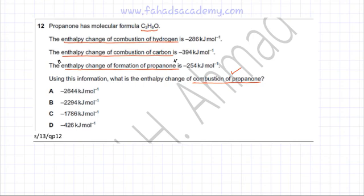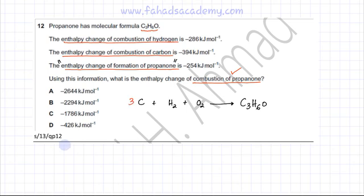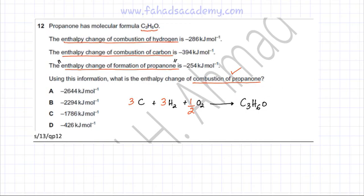Propanone is C₃H₆O. The enthalpy change of formation of propanone is the reaction where one mole of propanone is formed from its constituent elements in their standard states: carbon, hydrogen, and oxygen. Balancing this gives three carbons, three hydrogen molecules (H₂), and half an O₂ molecule. Propanone must be kept at one mole, which is why we place a half in front of O₂, since there is only one oxygen in the product.